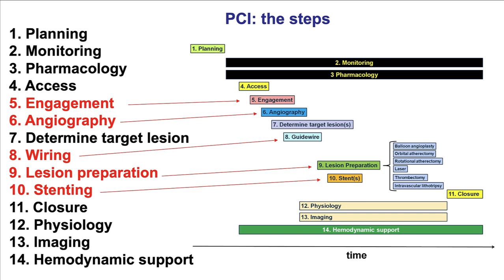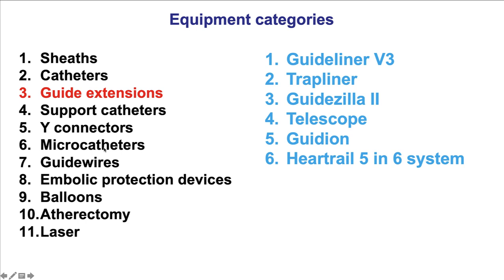Guide catheter extensions can facilitate several of the 14 steps of percutaneous coronary intervention, such as engaging the vessel, performing the diagnostic angiogram, wiring the lesion, repairing the lesion, and stenting the lesion, and they will be discussed in detail.